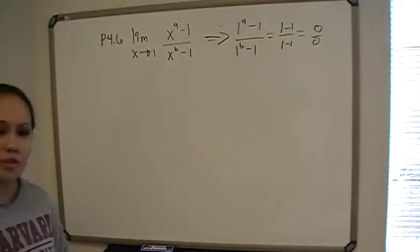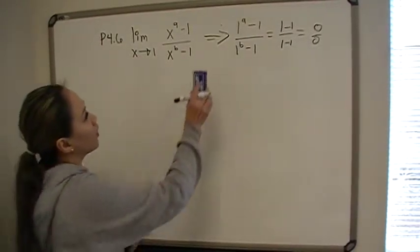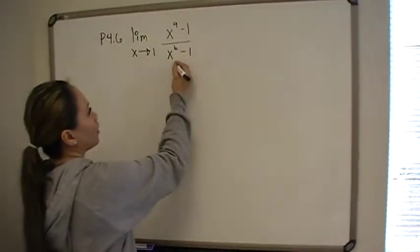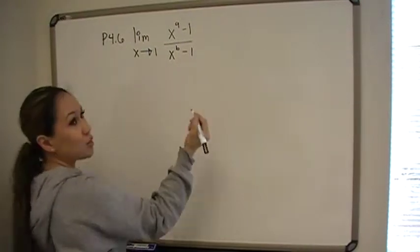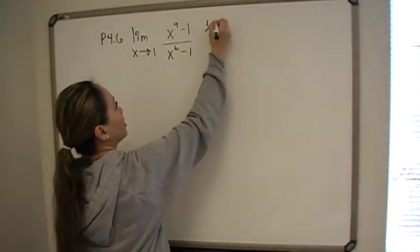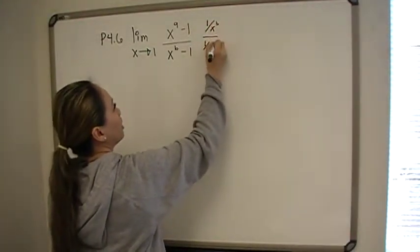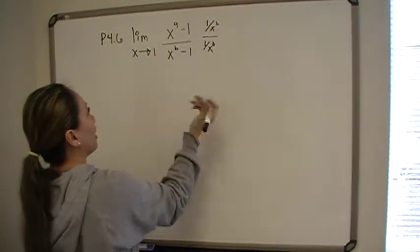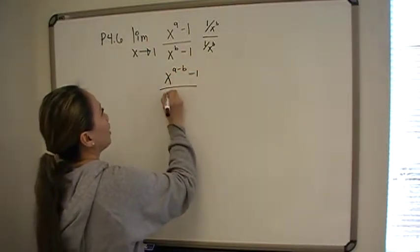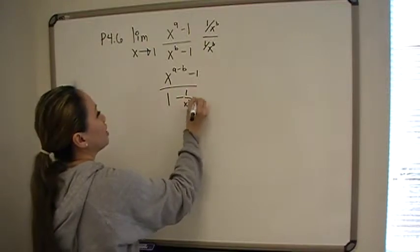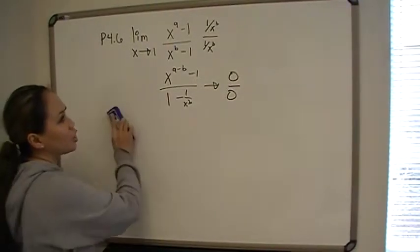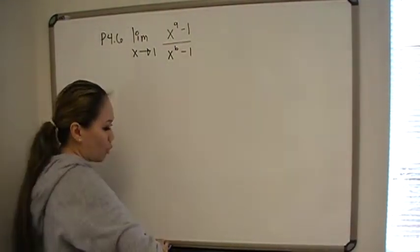That is the form that we can use L'Hopital's rule. Note that if we try to use the polynomial trick to divide through by 1 over x to the b, we'll still end up with the indeterminate form. I tried to divide everything through, multiplying top and bottom by 1 over x to the b like a regular polynomial, but we still end up with 0 to 0. So that didn't help me.